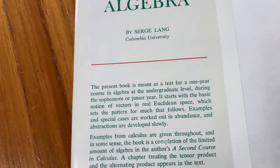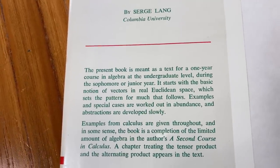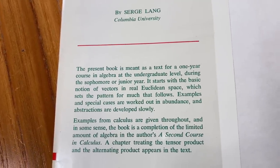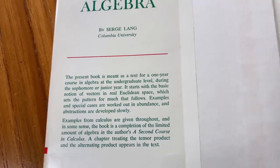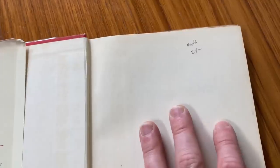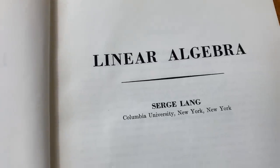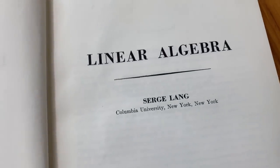It says the present book is meant as a text for a one-year course in algebra at the undergraduate level during the sophomore or junior year. In my opinion, this is definitely a proof-based linear algebra book. So if you're in college and you're taking a proof-based linear algebra class, I do think this would serve as a good supplement. Apparently someone used this for a class called Math 24 a long time ago. Linear Algebra, Serge Lang, Columbia University, New York, New York.